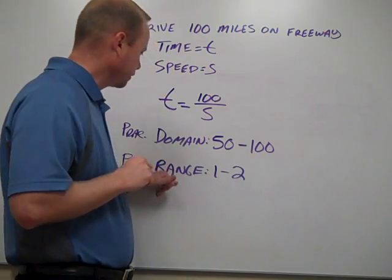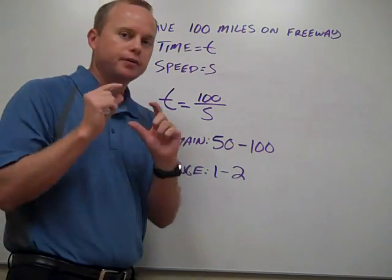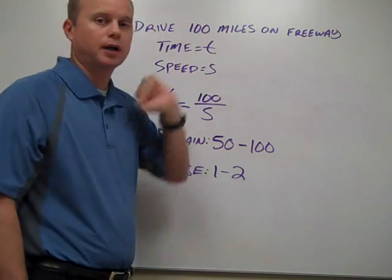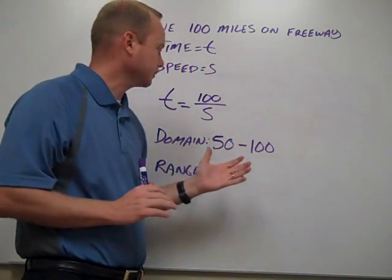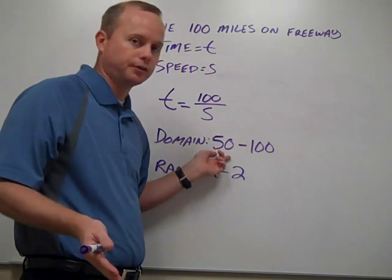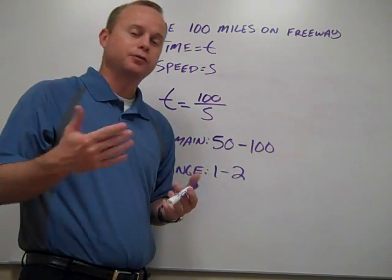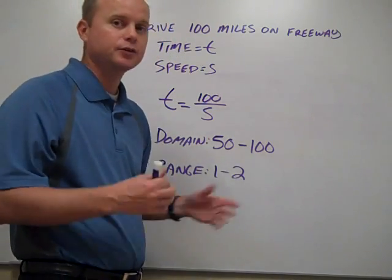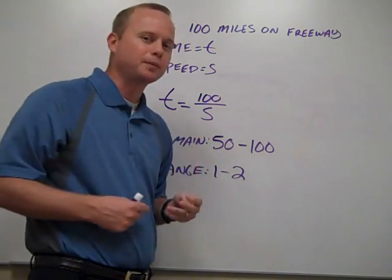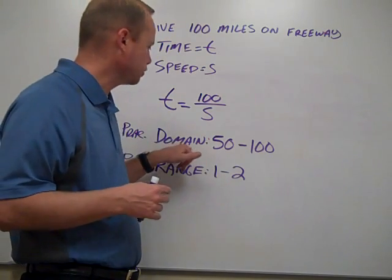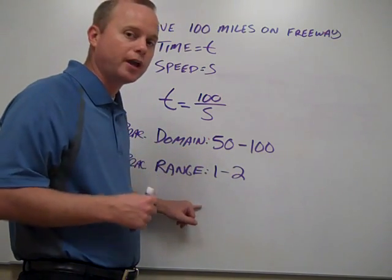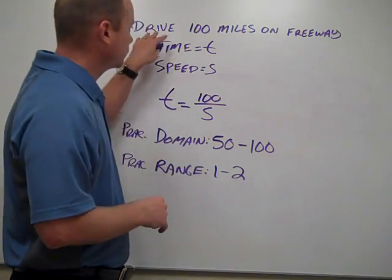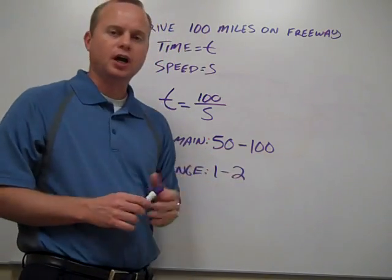Remember, practical range and practical domain are very specific to whatever this scenario is. If you weren't driving 100 miles but walking or running instead, the speed would be nowhere close to 50 — it might be 5 to 10 miles an hour, maybe 13 if you're really fast, but realistically not over 20. That would change your domain, and your range is based off of whatever your practical domain is. So on this particular one, our speed limits are somewhere between 50 and 100.